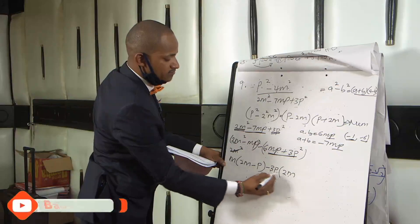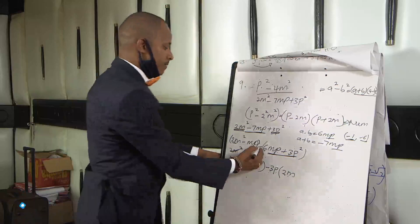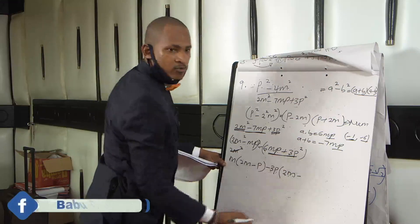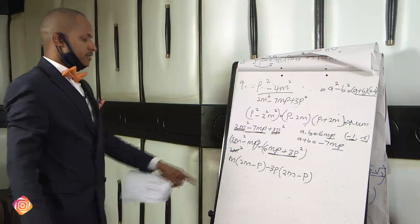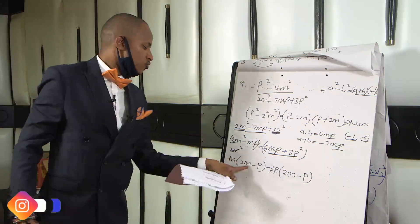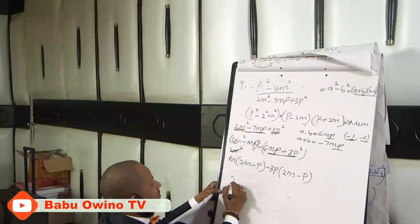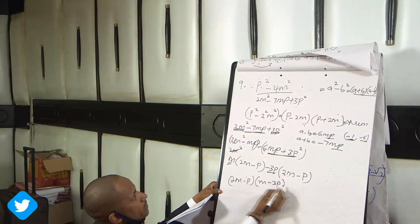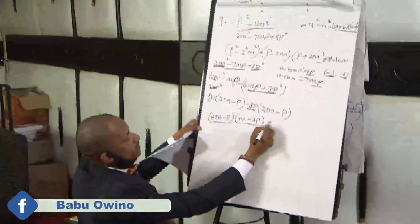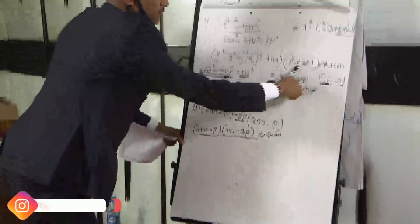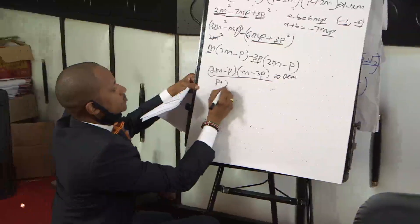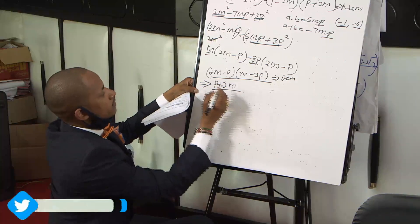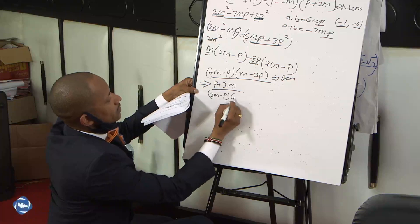When you open this, you get the two brackets. As you can see, we have 2m minus p and again 2m minus p. So you collect them together: 2m minus p, into m minus 3p. This is the denominator. So remember our numerator is p plus 2m into p minus 2m, divided by our denominator 2m minus p into m minus 3p.